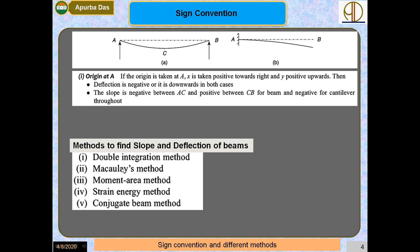There are different methods used to solve for slope and deflection of beams: the double integration method, Macaulay's method, moment area method, strain energy method, and conjugate beam method. In the strain energy method there are two theorems — Castigliano's theorem one and Castigliano's theorem two.